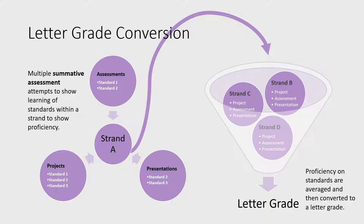This diagram shows how standards-based scores get converted into letter grades reported on progress reports. Each assessment can include one or more standards. Standards of similar skills or knowledge are grouped into strands. Each time a student shows learning associated with a standard, it contributes to a level of proficiency for the group of skills or knowledge, or strand. The levels of proficiency of each strand are averaged, contributing to a letter grade for the course.